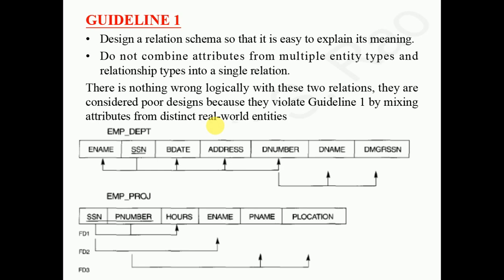This poor design violates guideline one, which says all attributes should have meaning in the particular relation and we should not combine attributes from different entity types. In the employee-department table with employee name, SSN, birth date, address, D-number, D-name, and department manager SSN, the department number, department name, and department manager SSN do not belong to the same relation. Storing them together leads to redundant tuples and anomalies. The solution is to decompose: SSN implies employee name, birth date, address, and department number; then department number is stored separately, implying department name and department manager SSN.